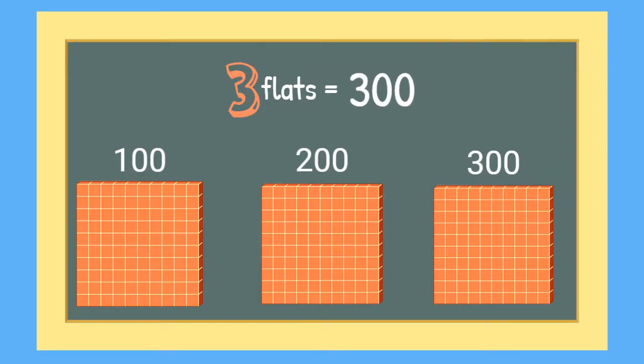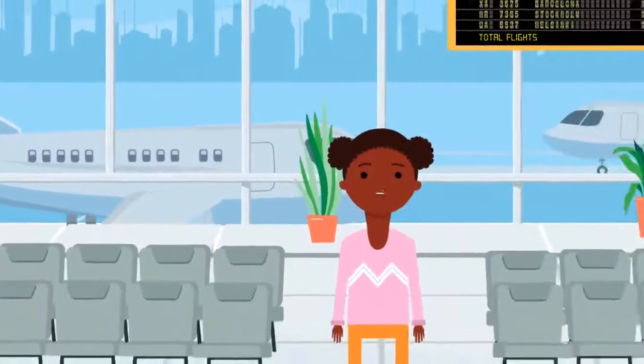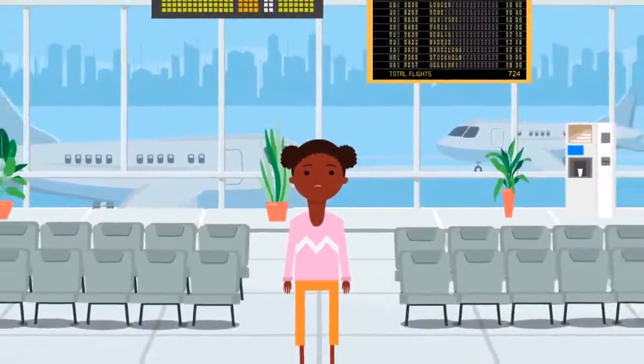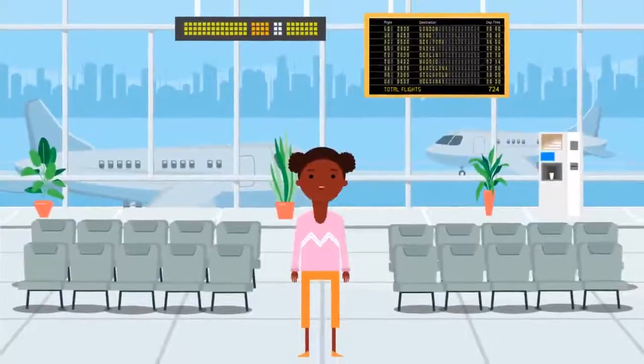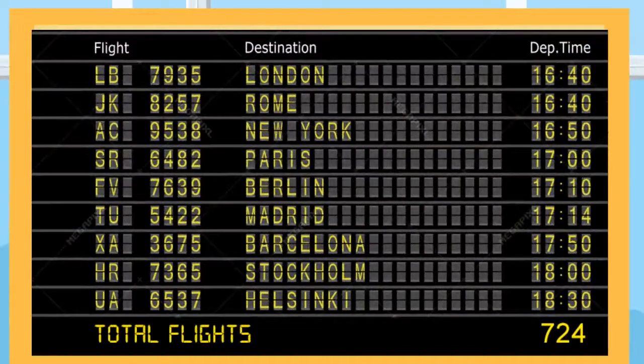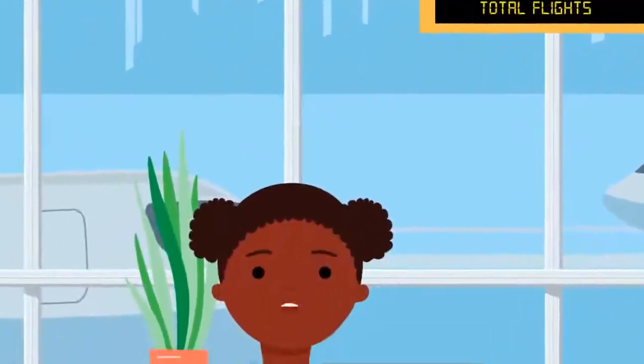Let's head over to the airport to find out more about place value. I just love to watch the planes take off at the airport. There are so many planes that are leaving today. On the flight board, it says that there are 724 flights today. I am thinking about how I would build that number with my blocks.